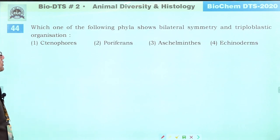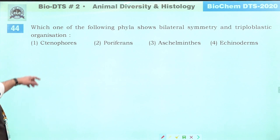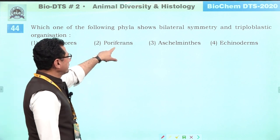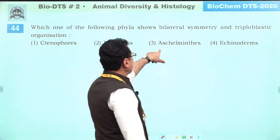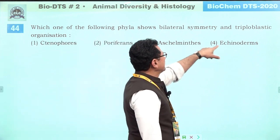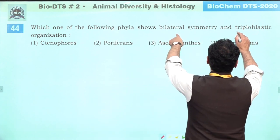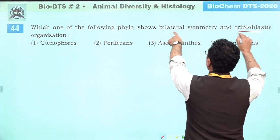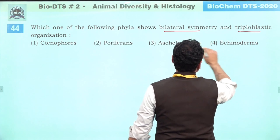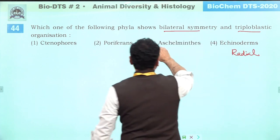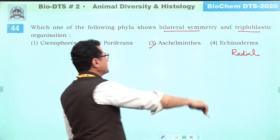Which phylum shows bilateral symmetry and triploblastic organization? Cnidarians are diploblastic and radially symmetrical. Ctenophores are also not truly diploblastic. Platyhelminthes are triploblastic and bilateral. So answer is three — Platyhelminthes.